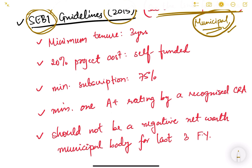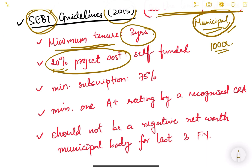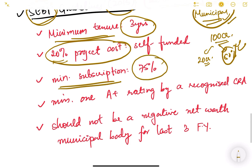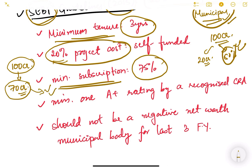Key SEBI 2015 guidelines include: the minimum tenure of municipal bonds must be three years. If issued for a specific new project — for example a 100 crore project — the municipality must have 20 percent self-funding, meaning 20 crores must come from the municipality's own or other sources, and the remaining 80 percent can be raised as bonds. Additionally, the minimum subscription must be 75 percent — if only 70 percent of bonds are subscribed, the municipality must return all funds and cannot proceed.